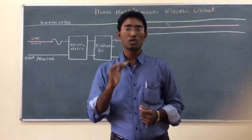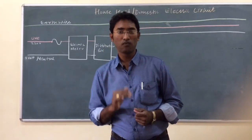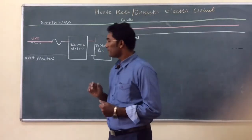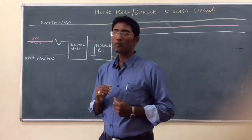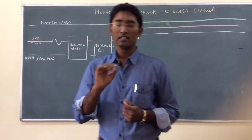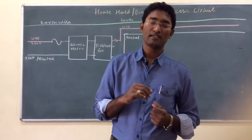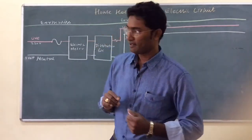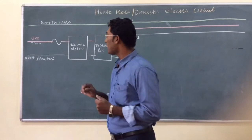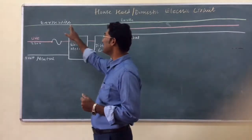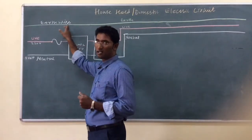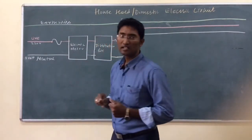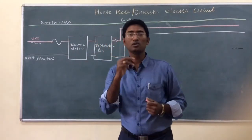The potential difference between the live wire and the neutral wire is 220 volts. There is one more wire connected in the domestic electric circuit — the earth wire. The earth wire is green in color and has green insulation over it.